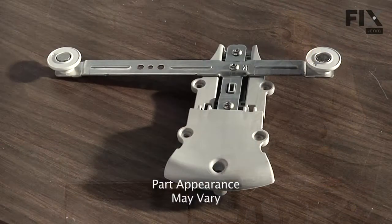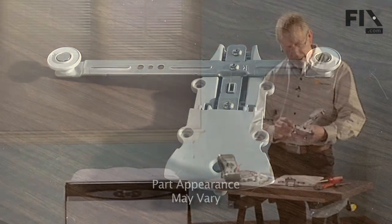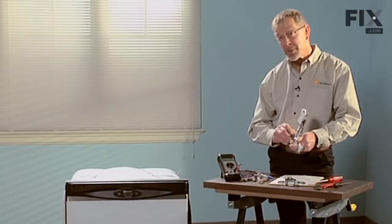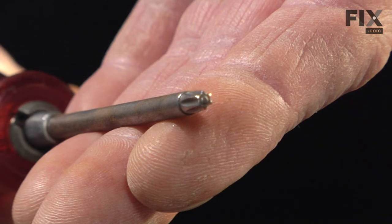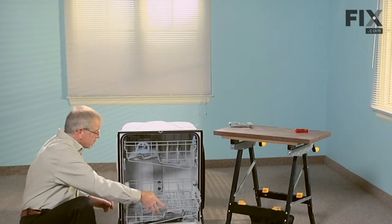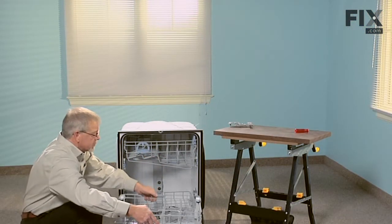I have to install this adjuster on my dishwasher rack. Looking it over, it looks pretty simple. I think all I'm going to need is a number 15 Torx screwdriver and that should be it. We're going to give it a try.